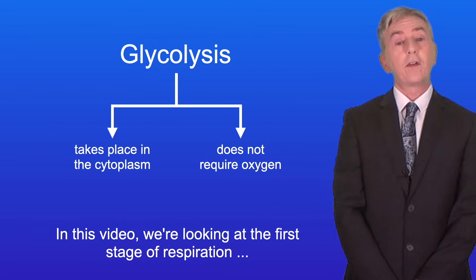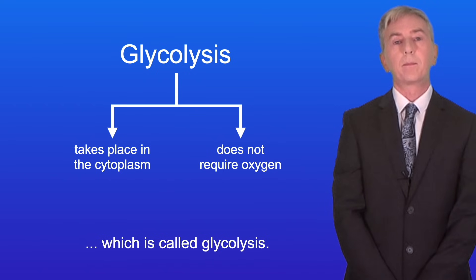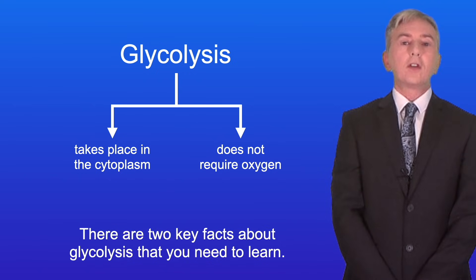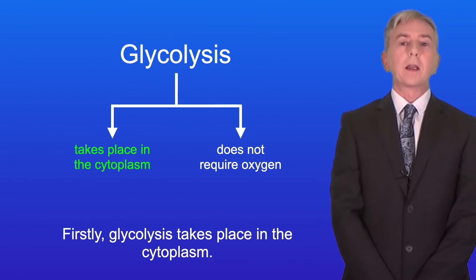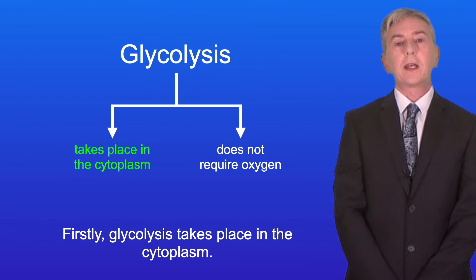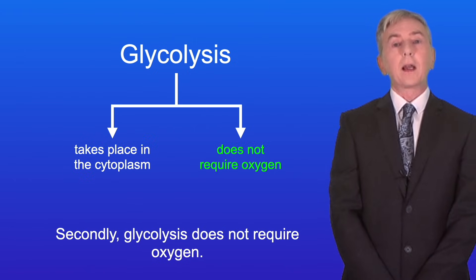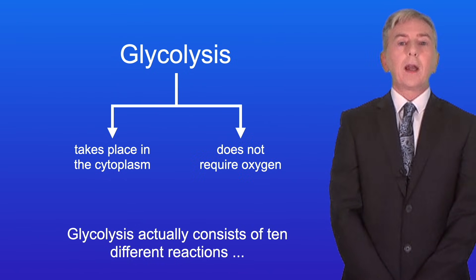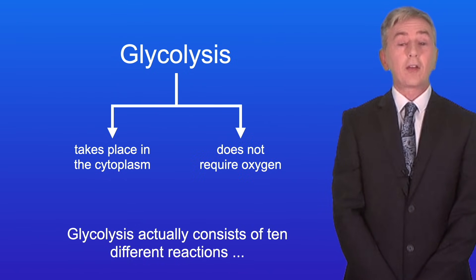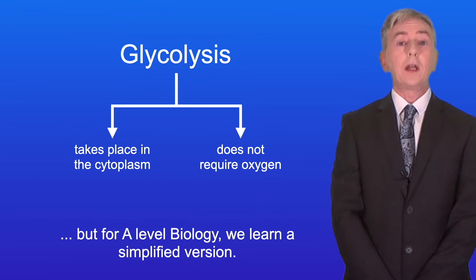In this video we're looking at the first stage of respiration, which is called glycolysis. There are two key facts about glycolysis that you need to learn. Firstly, glycolysis takes place in the cytoplasm. And secondly, glycolysis does not require oxygen. Glycolysis actually consists of 10 different reactions, but for A-level biology we learn a simplified version.